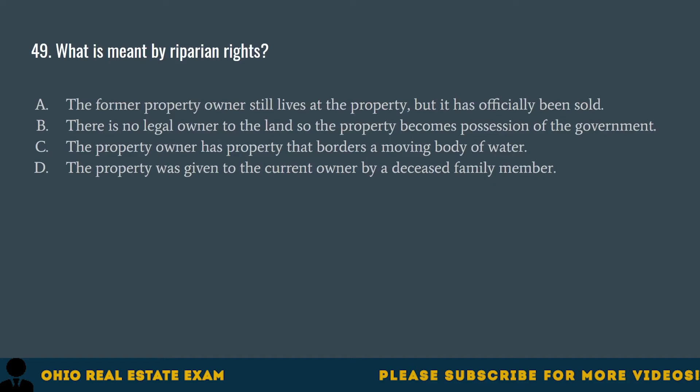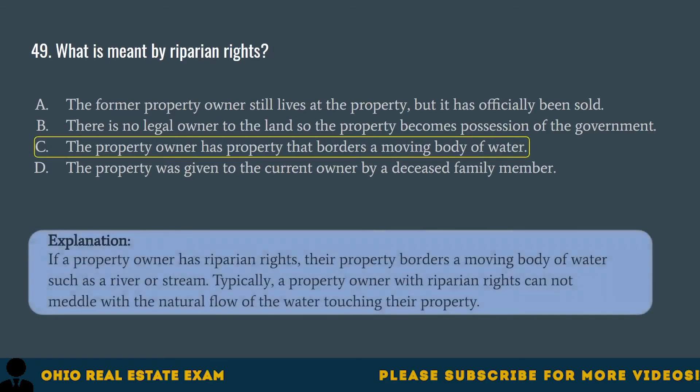Question 49. What is meant by riparian rights? A. The former property owner still lives at the property, but it has officially been sold. B. There is no legal owner to the land, so the property becomes possession of the government. C. The property owner has property that borders a moving body of water. D. The property was given to the current owner by a deceased family member. The correct answer is C. If a property owner has riparian rights, their property borders a moving body of water, such as a river or stream. Typically, a property owner with riparian rights cannot meddle with the natural flow of the water touching their property.